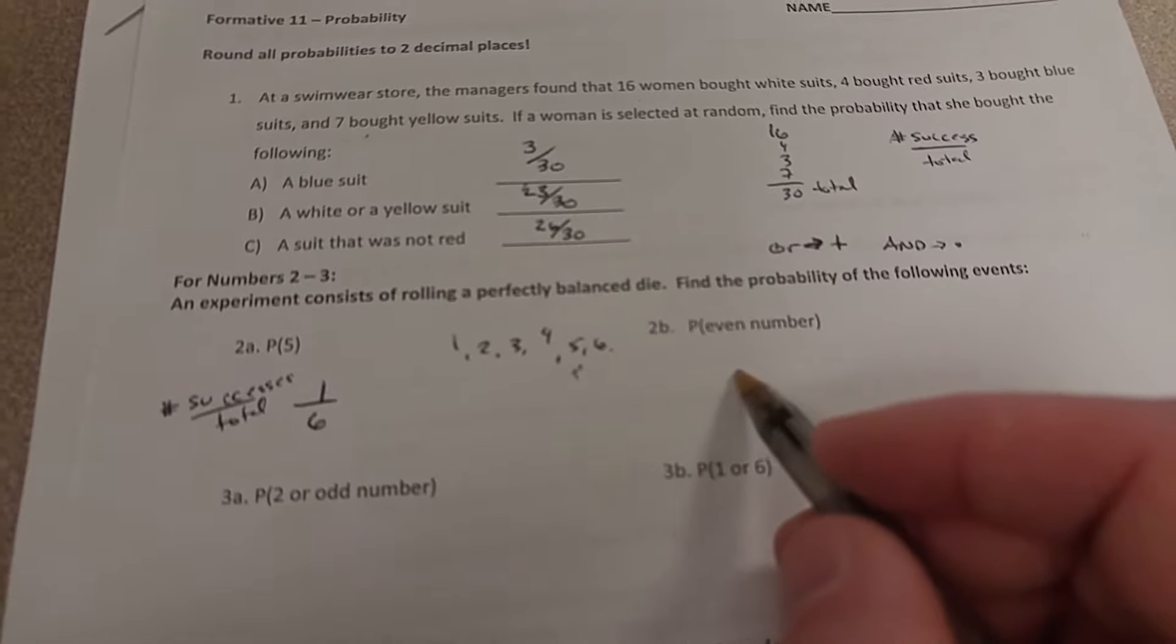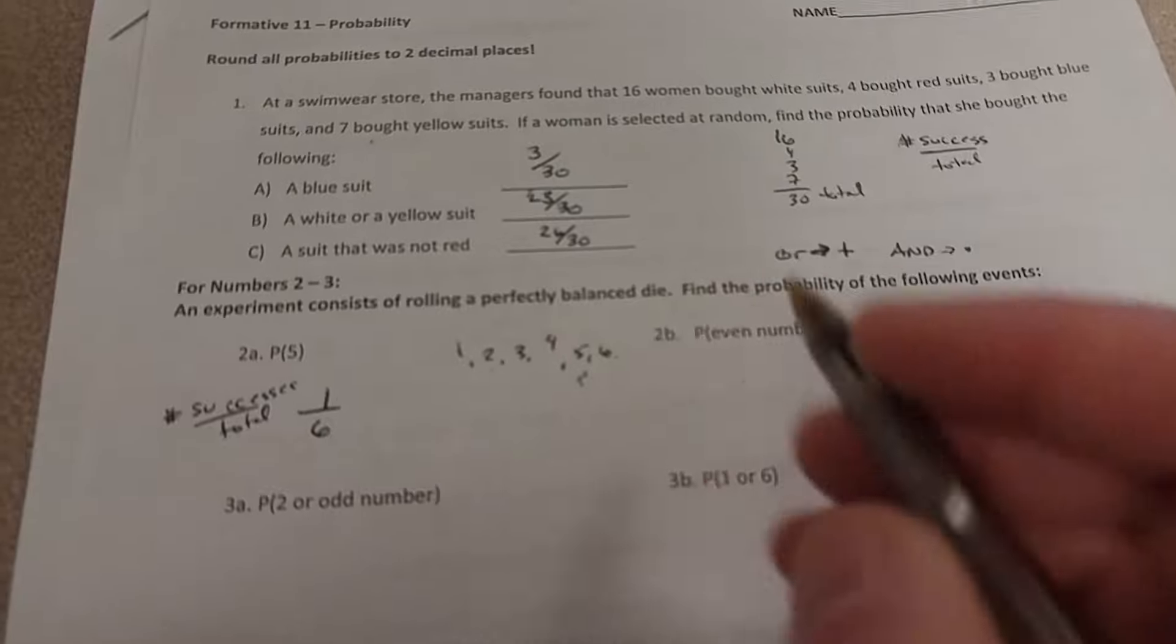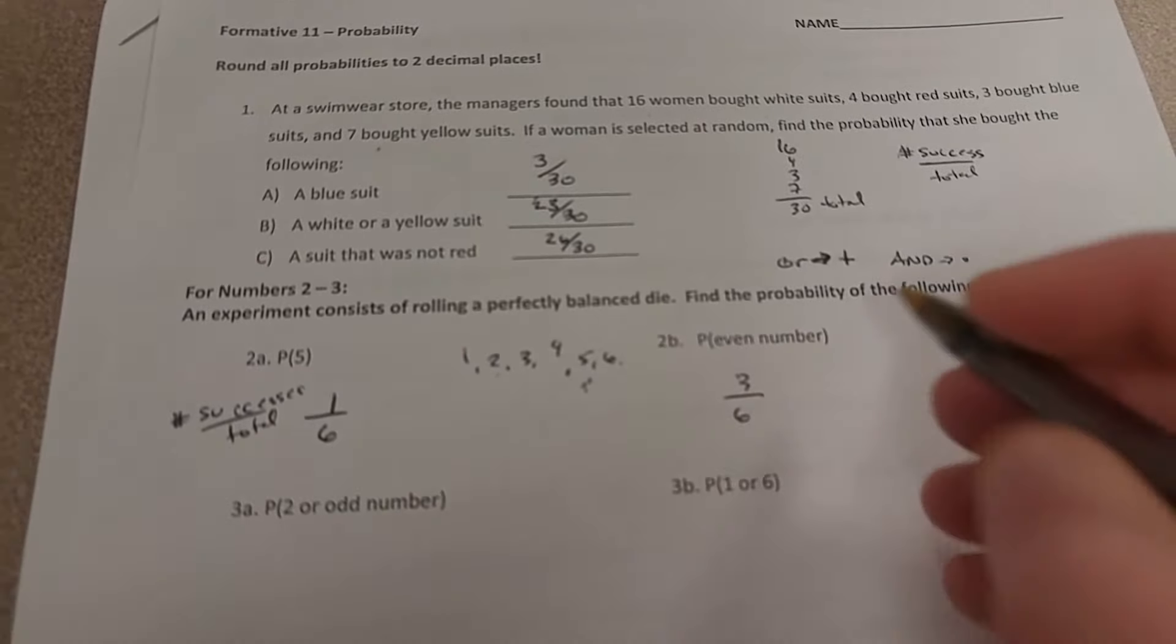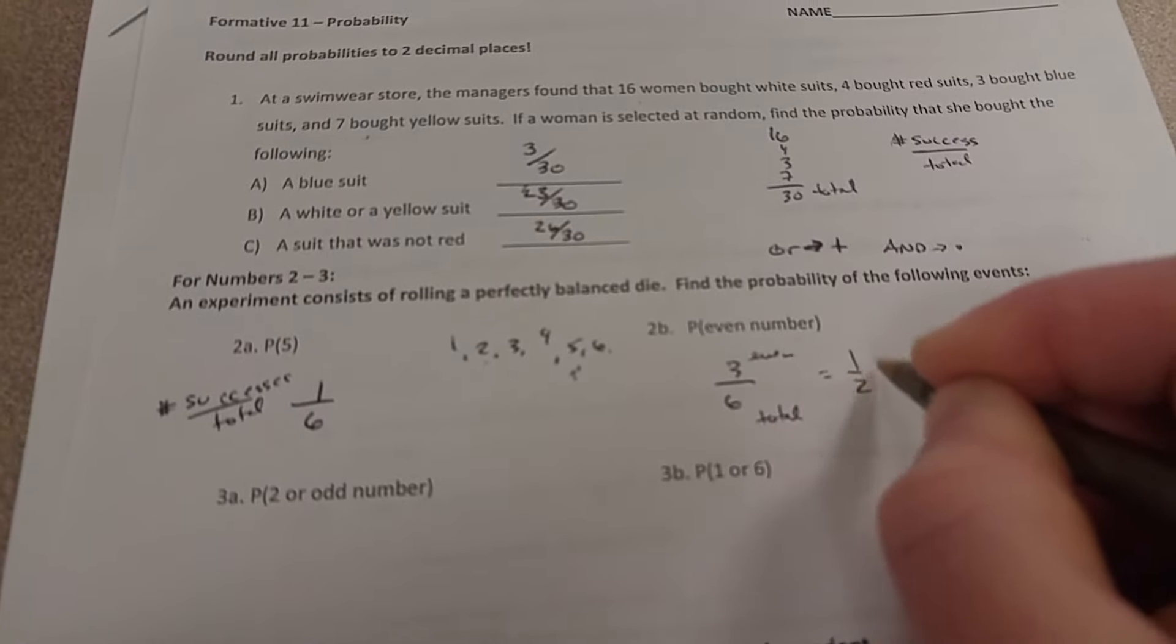The probability of an even number, well, there are 2, 4, 6, there are 3 even numbers out of the total of 6. So there are 3 even, 6 is the total, and that reduces down to 1 half.